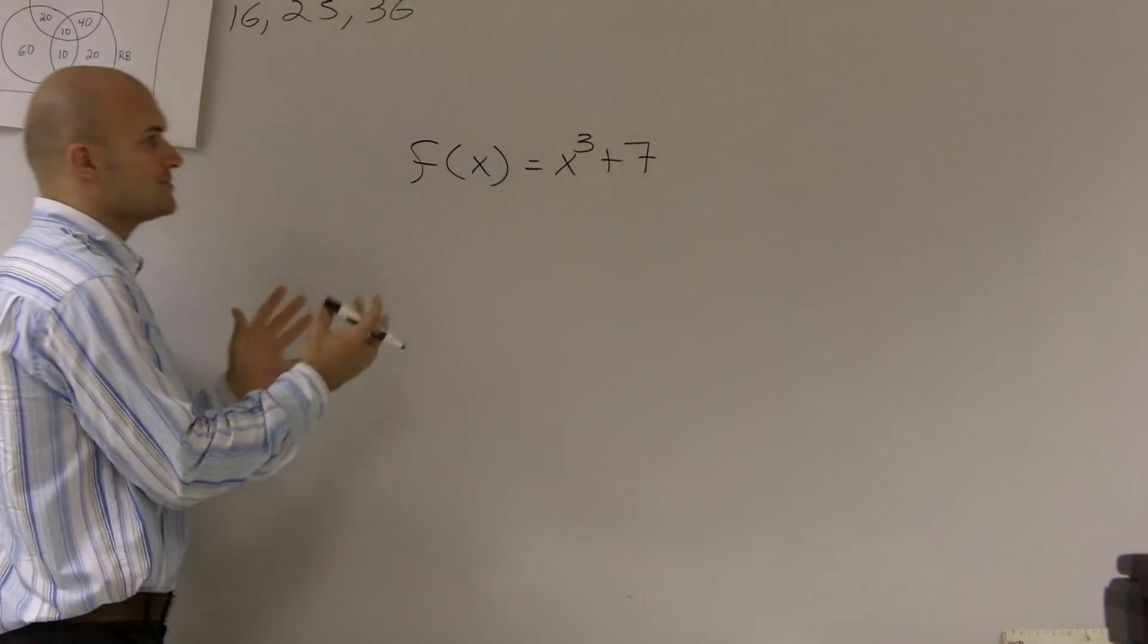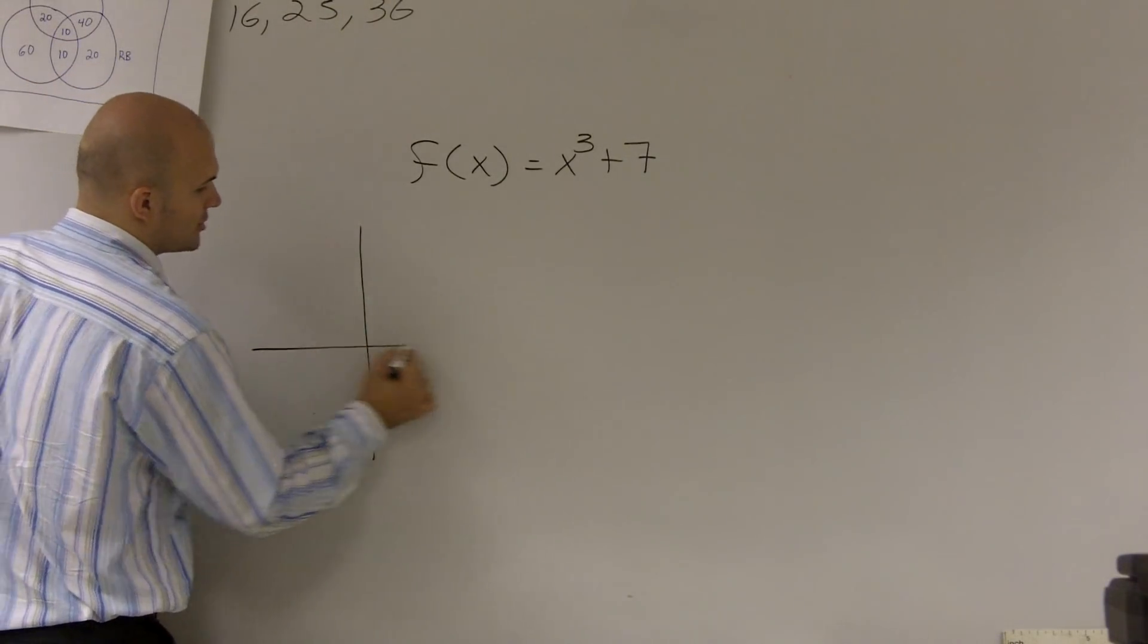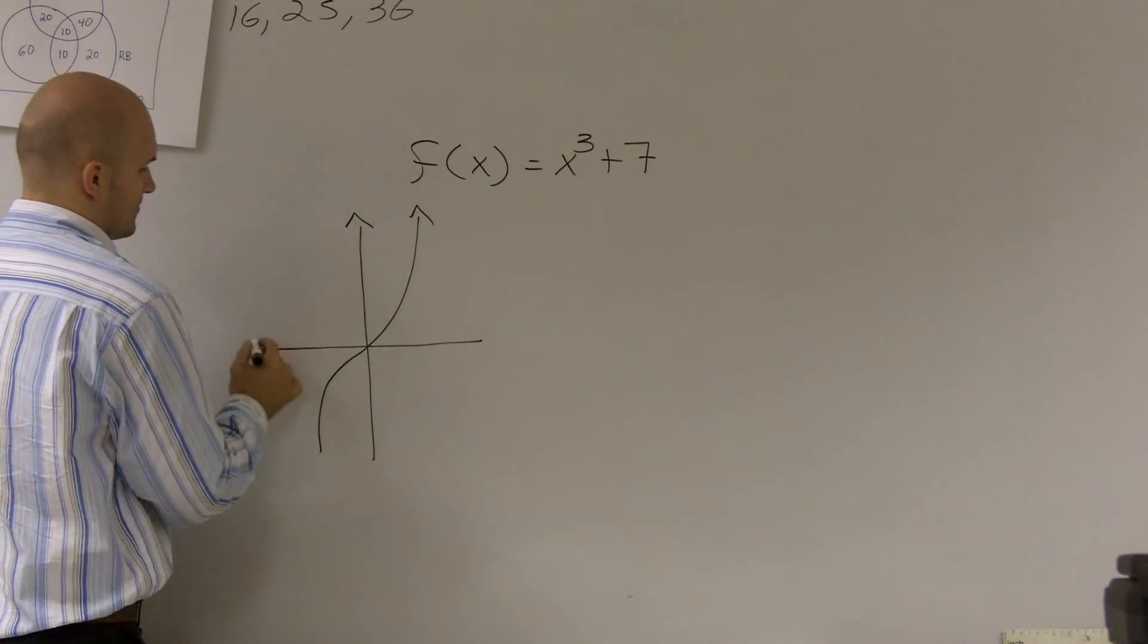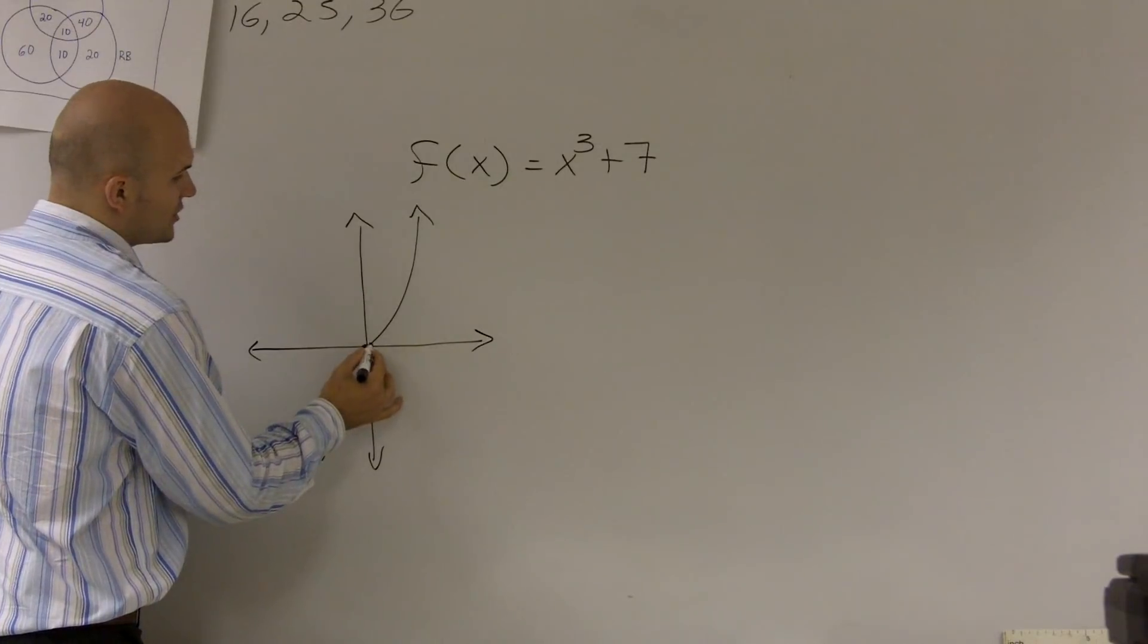So remember guys, the first thing we always want to look at is always remember what our graph is going to look like. So when we're dealing with a cubic function, it looks something roughly like that, where we have a continuous function, so we've got some arrows. We know it's going to cross that 0, 0.